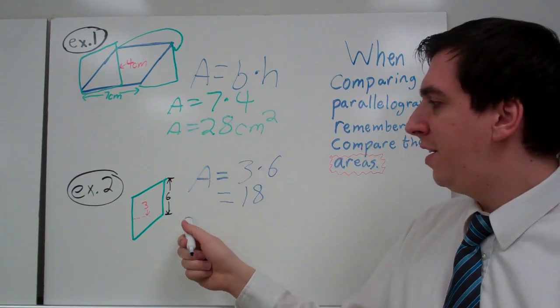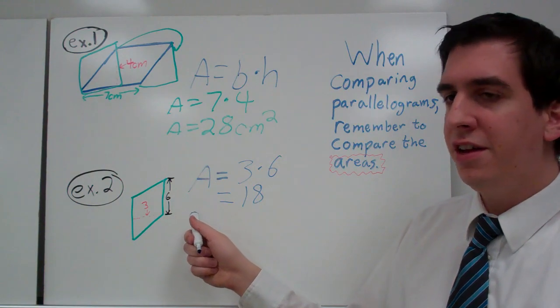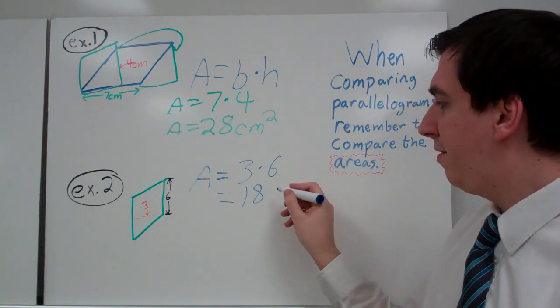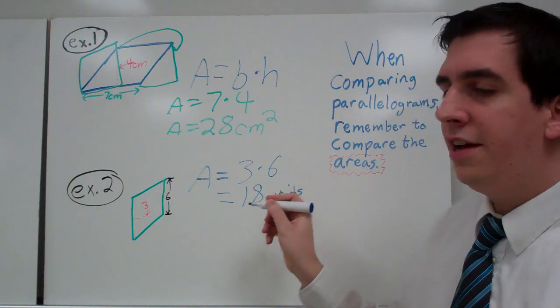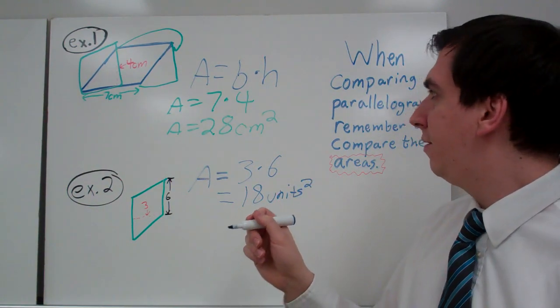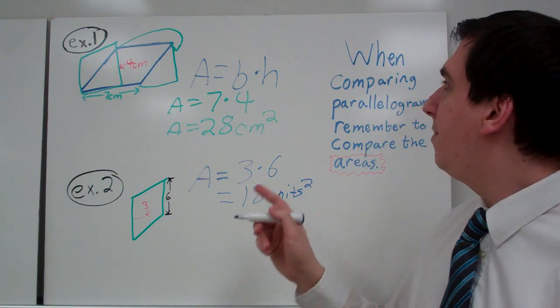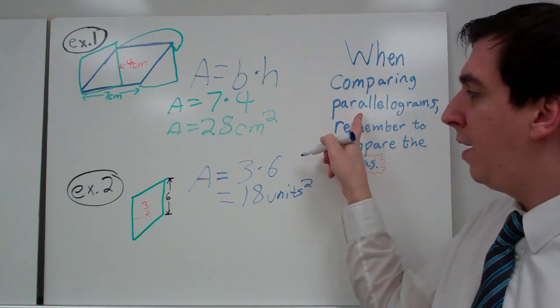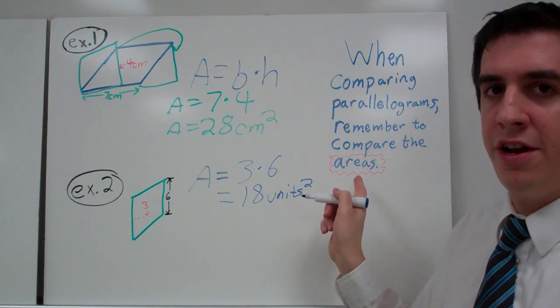Should we put centimeters squared on there? What are our units here? If we're not given units, we have to write units. And since this is an area, it's units squared. I want us to keep in mind when we're comparing parallelograms, remember to compare the areas.